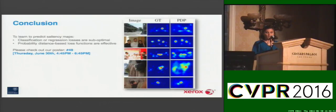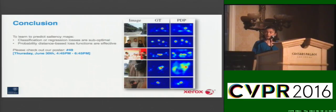To conclude, we revisit saliency as a stochastic process and observe that probability distance-based loss functions are much more effective as opposed to classification or regression losses, which are suboptimal for this task. Looking at qualitative results, our approach quickly narrows down to regions of semantic meaningfulness, such as traffic lights, the faces of people, and other creatures in the images.